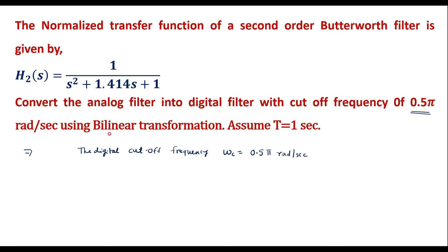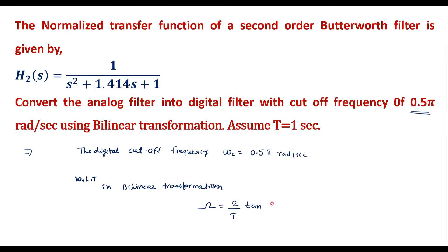We know that in bilinear transformation, the relation between digital cutoff frequency and analog cutoff frequency is given by Ω = (2/T) · tan(ω/2). Here this ω is the digital frequency and this Ω is the analog frequency.